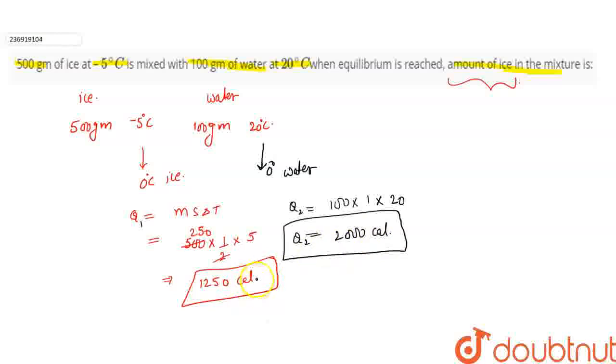It needs 1250, it will release 2000. So 1250 will easily be provided. This 500 gram ice at minus 5 degrees will easily become 0 degree ice by taking 1250 calories. Now how many calories remain? The remaining is 2000 minus 1250 = 750.